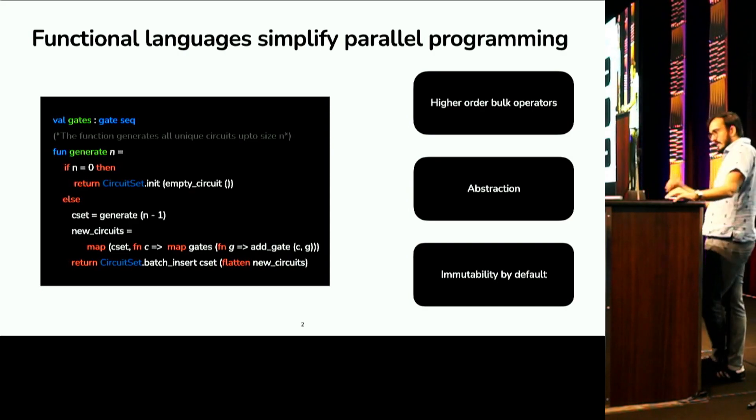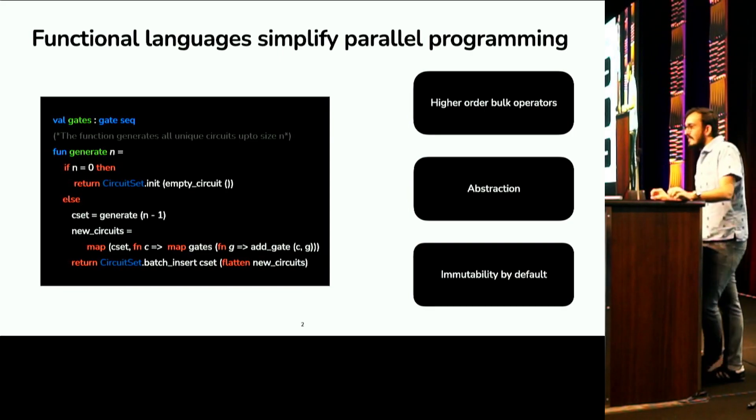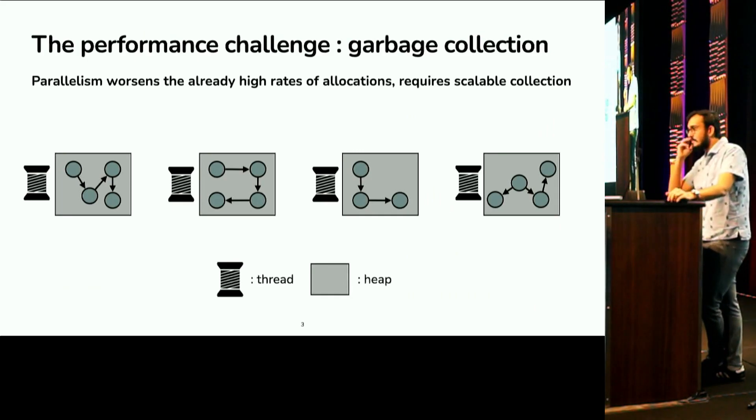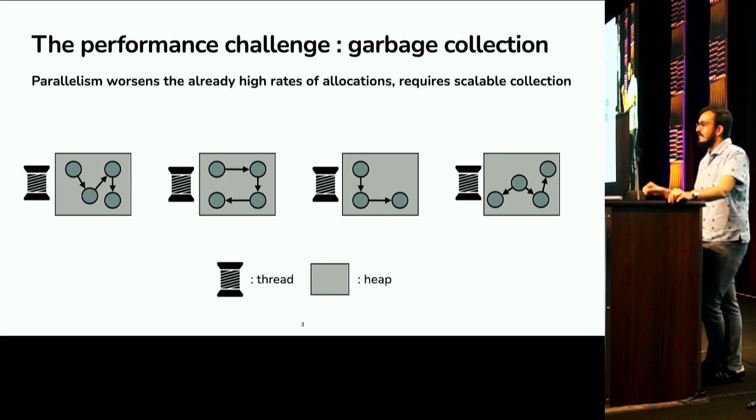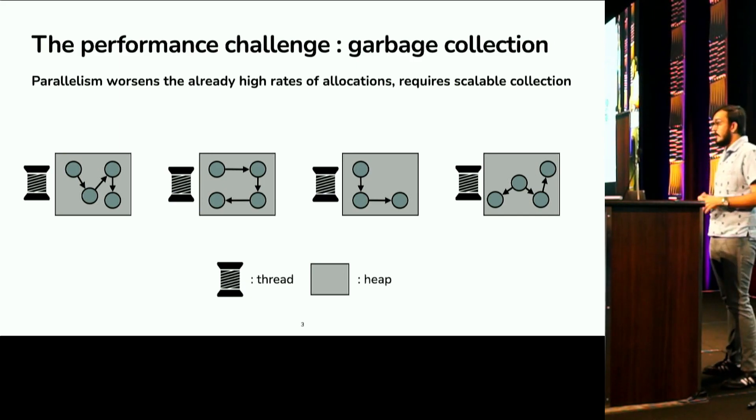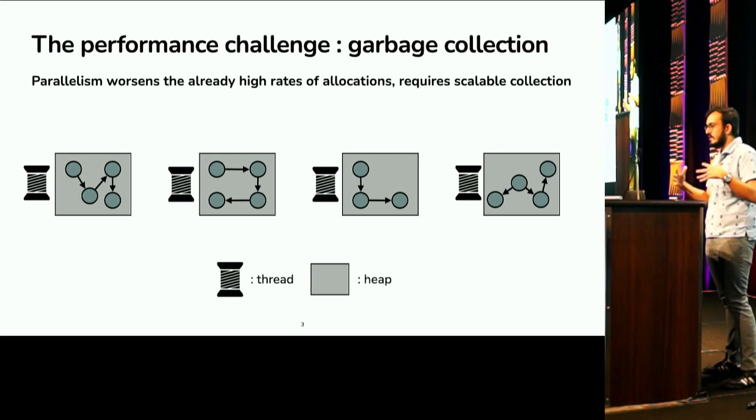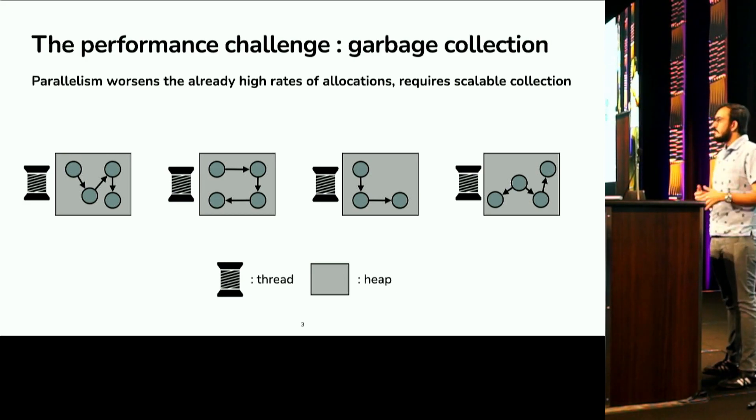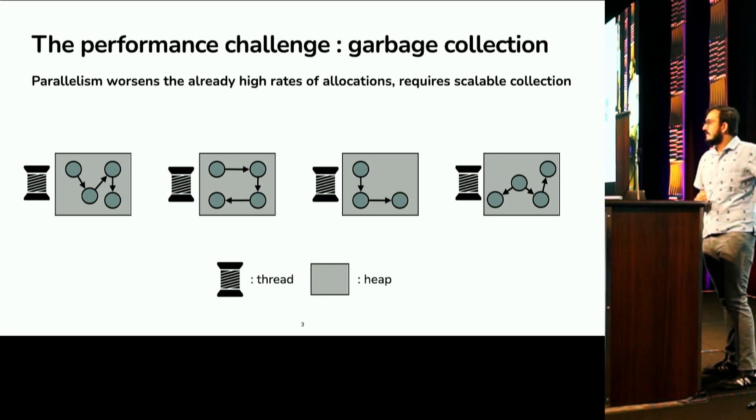So all of these reasons make functional programming a good fit, but the looming question somewhere in the back is that can parallel functional programming compete with the fastest techniques out there? And the main problem when it comes to the performance of parallel functional programming is one of memory. So we all know that functional programs allocate at a very high rate, and this already high rate multiplies many times when many threads are demanding memory at the same time. So in order to keep up with the demands of these parallel threads, you need to basically parallelize garbage collection.